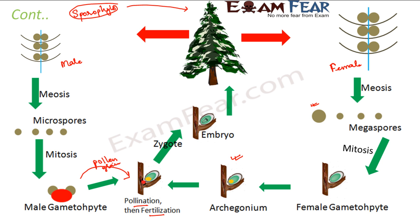The zygote grows gradually to form the embryo, and this embryo finally grows back to form a mature sporophyte. This is the life cycle of a gymnosperm, where the dominant phase is the sporophyte. The embryo is present inside the seed, and this seed germinates into a plant — a process we see in daily life. When the plant matures, it becomes the sporophyte phase, which produces microspores and megaspores, forming gametophytes, and the process continues.